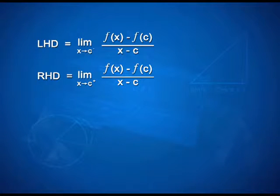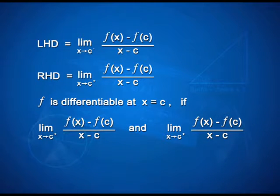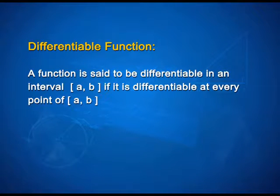The right-hand derivative is the limit of f(x) minus f(c) by x minus c as x takes values closer to c but greater than c, indicated as c positive. We say that a function is differentiable at x = c if these two limits — the left and the right-hand derivative — are finite and equal. A function f is said to be differentiable in an interval (a, b) if it is differentiable at every point of (a, b).